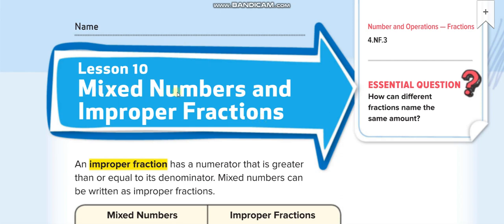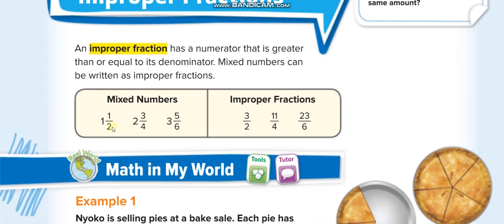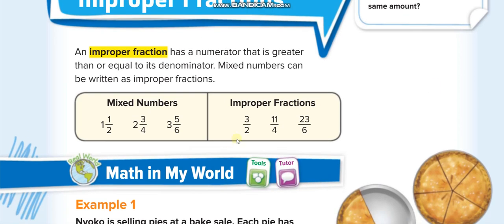In the last lesson you studied mixed numbers — when you have whole numbers and fractions together, that is known as a mixed number. When you have a fraction whose numerator is greater than the denominator, like 3 over 2, that is known as an improper fraction. If the numerator is smaller, like 1 over 2, it is a proper fraction. Examples like 11 over 4 and 23 over 6 are improper fractions.